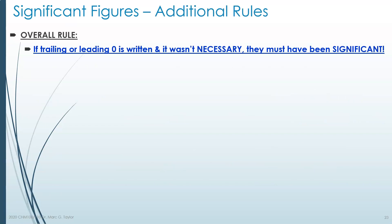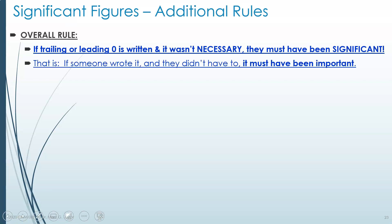These are obviously a lot of rules, so here's one condensed rule that covers several of them: if trailing or leading zeros are written and they weren't necessary — that is, you didn't have to write them — then they must have been significant. Another way to say it: if someone wrote a zero and didn't have to, and the number would have exactly the same value without it, well, then it must have been important. It must have been significant.